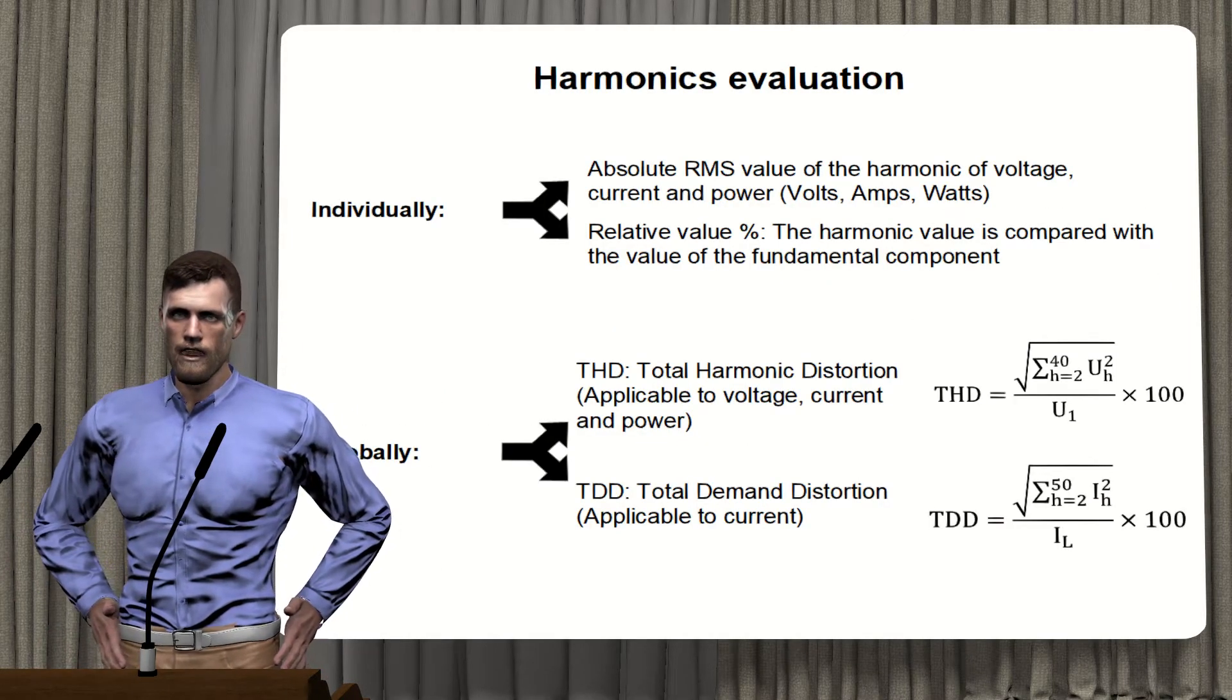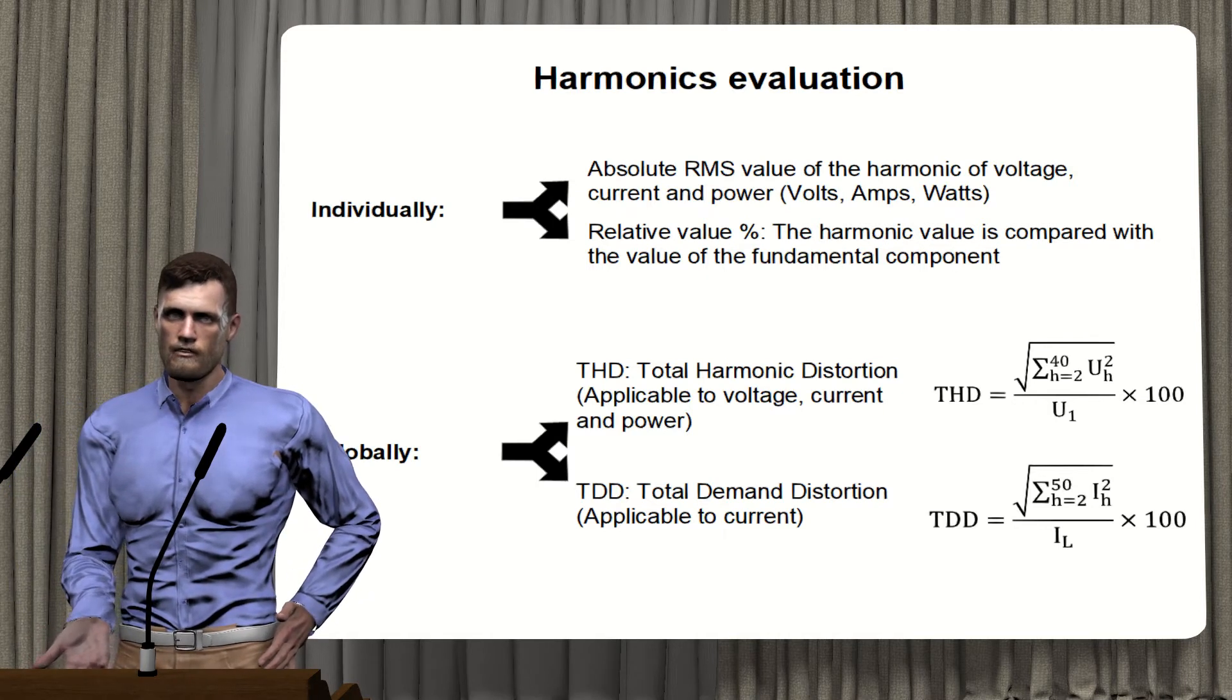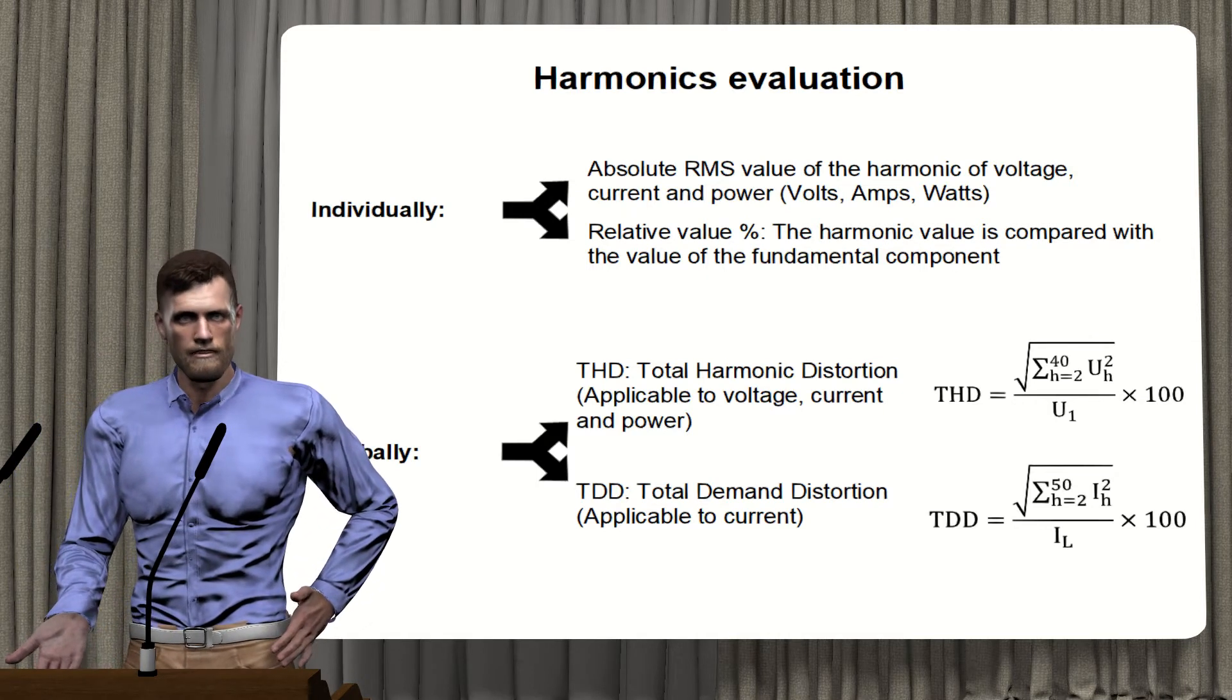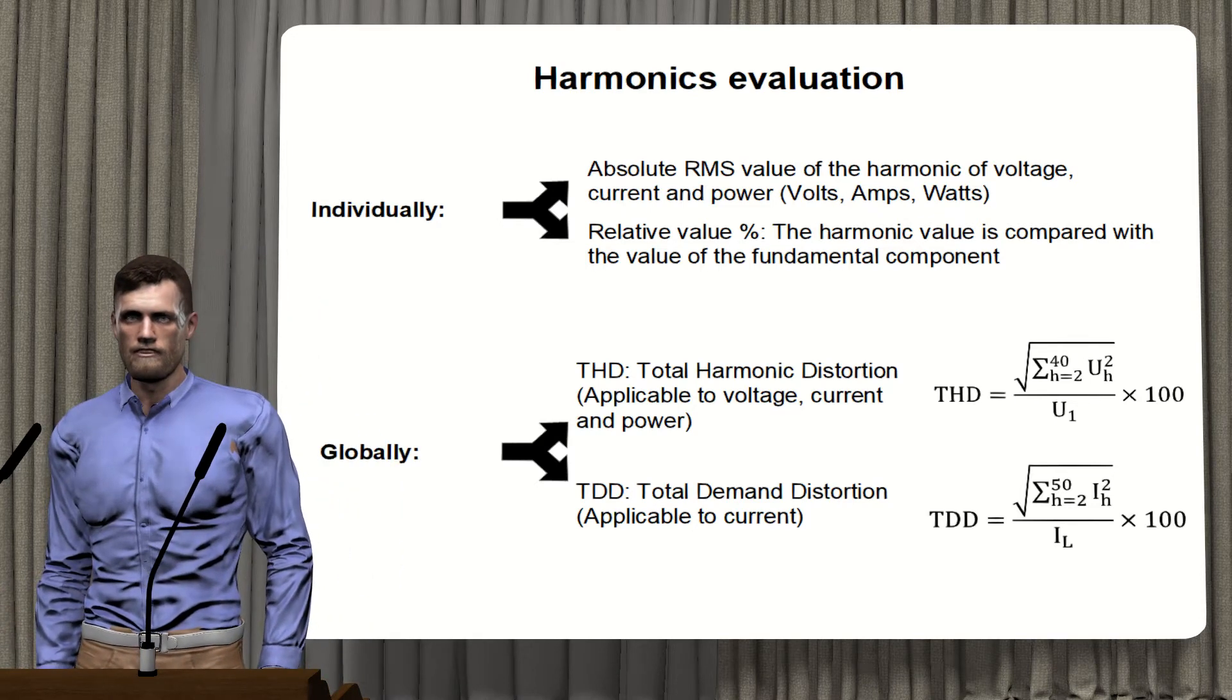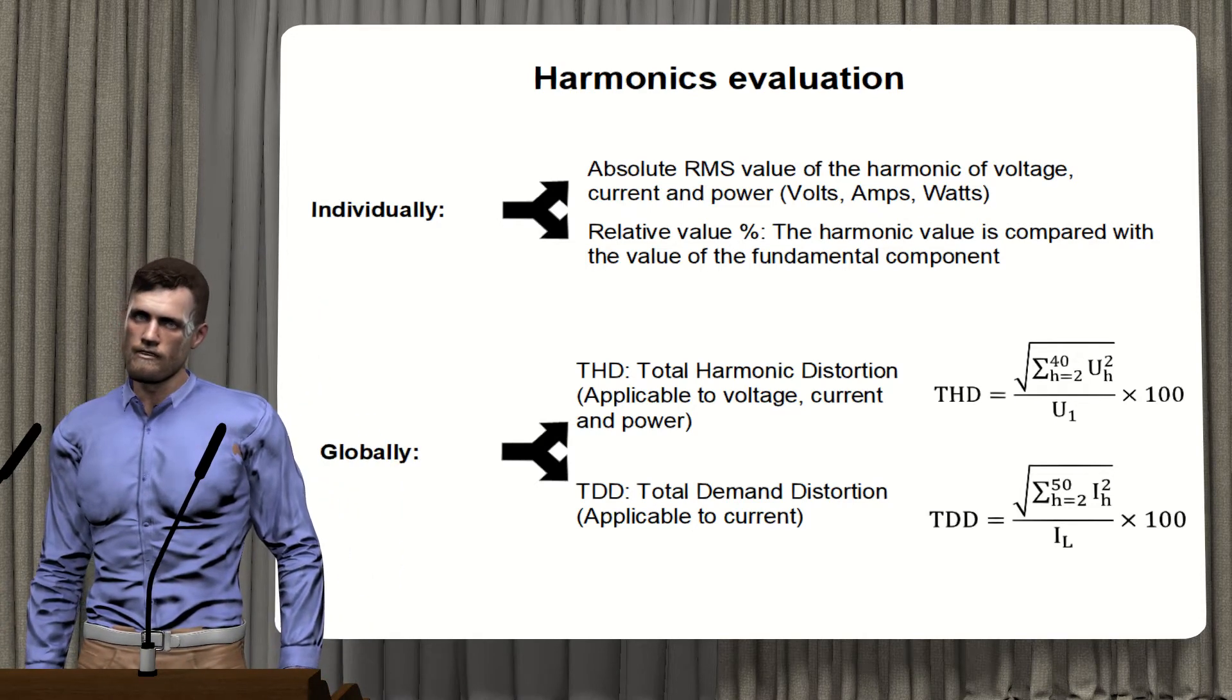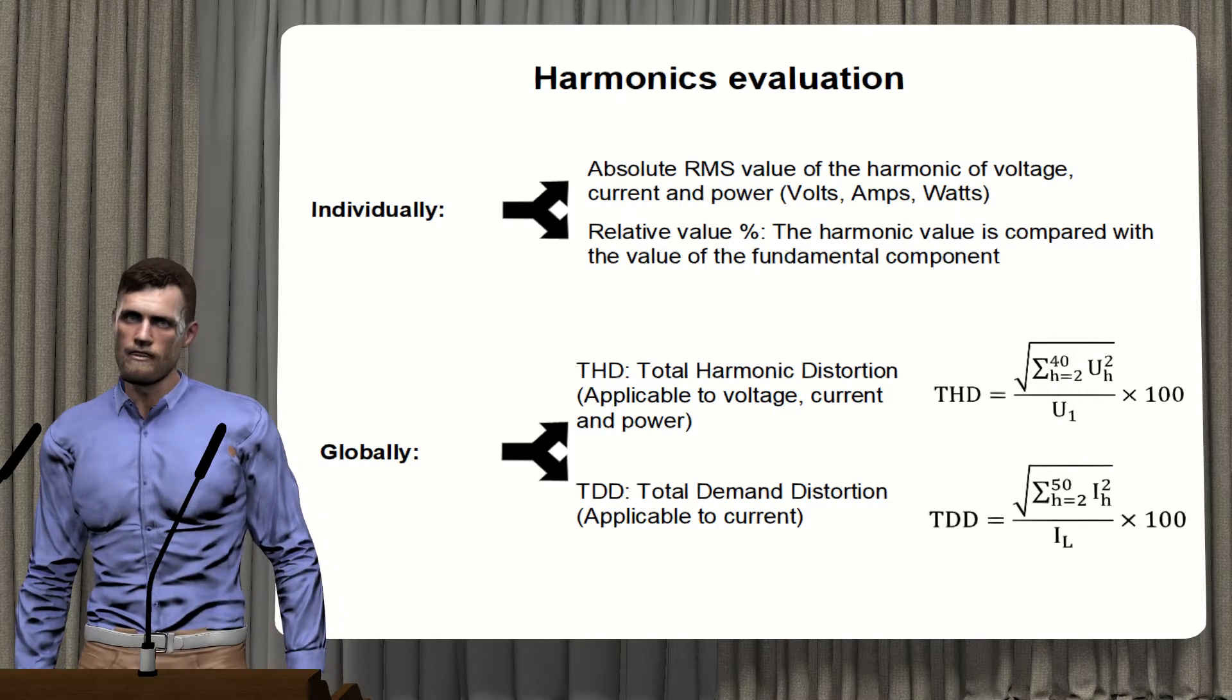Considering that an instrument like the Fluke 435 can analyze up to the 50th harmonic, perhaps for a preliminary study we need a less detailed view. Therefore, to simplify the study we can use two parameters offered by analyzers such as the Fluke 435.